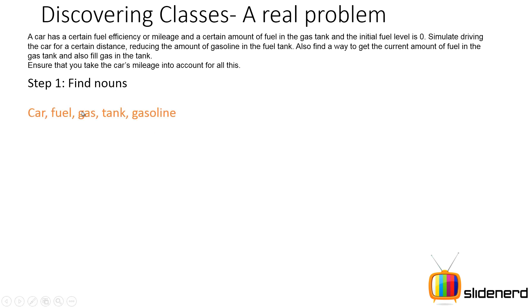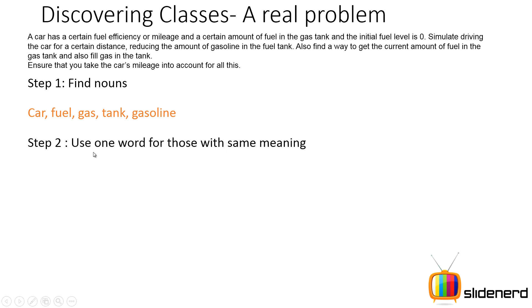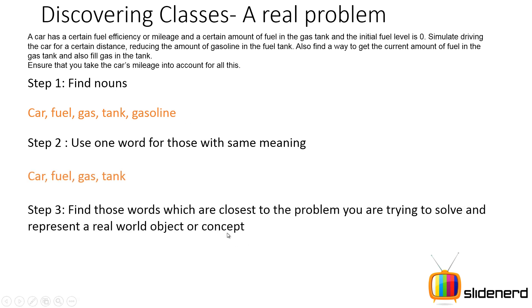Car, fuel, gas, tank, gasoline — these are the nouns I find in this problem. Step 2: use one word for those with the same meaning. For example, gas and gasoline have the same meaning, so we use a single word for them. Step 3: find those words which are closest to the problem you're trying to solve and represent a real world object.